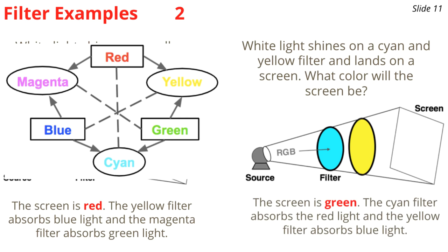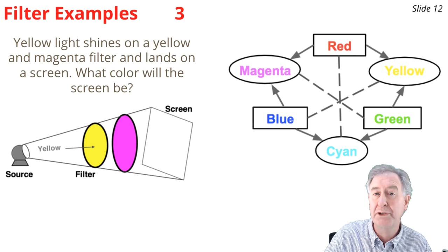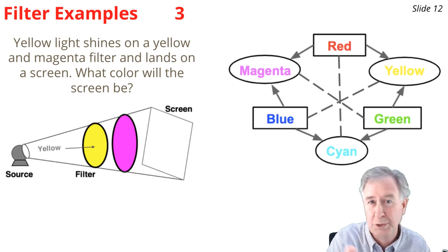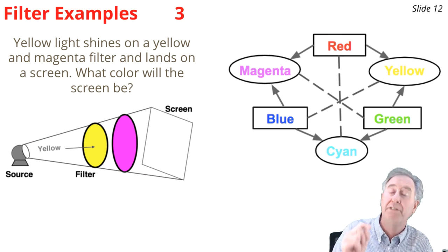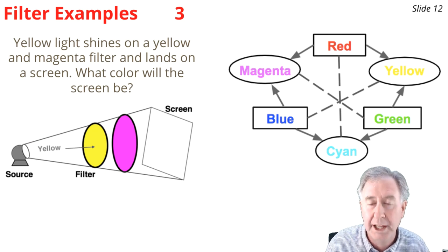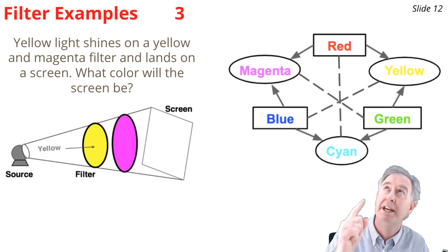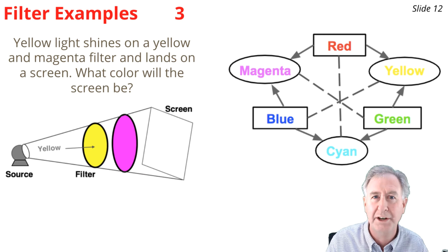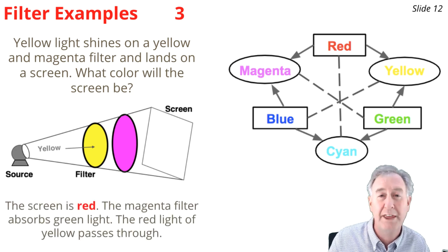In the next example, yellow light — which is red and green primary colors — approaches a yellow filter and a magenta filter. The yellow filter absorbs blue, but there's no blue present, so red and green both pass through. Then the magenta filter absorbs the green, and only red light gets through the second filter, lands on the screen, and the screen looks red.